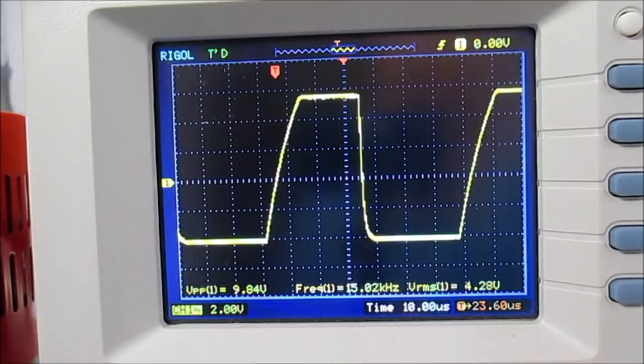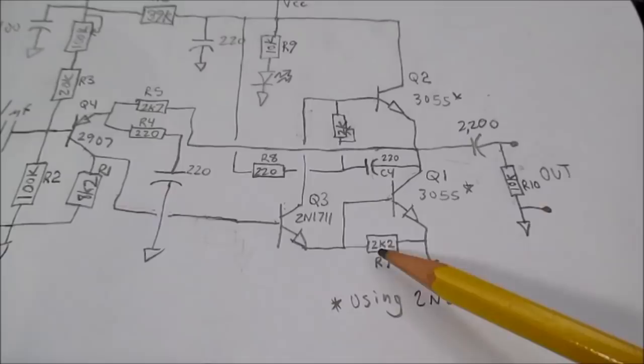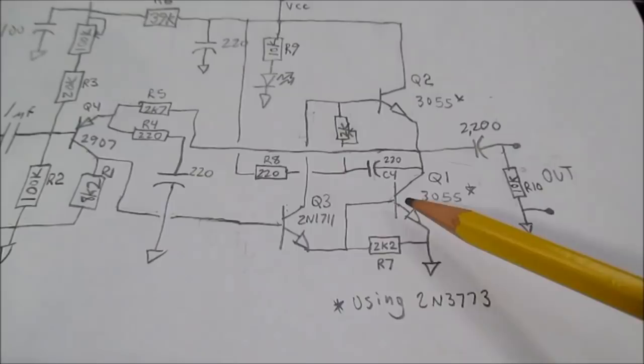Another thing I want to take a look at is reducing the value of this resistor here. These two transistors form a Darlington pair. And normally you see a resistor connected from the base of the second transistor down to the emitter, which helps speed up the Darlington pair.